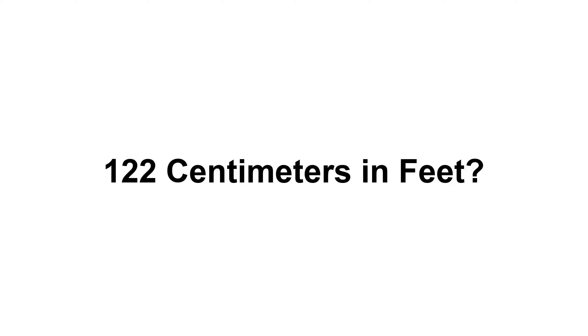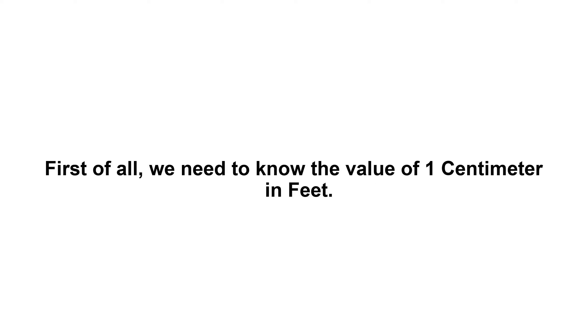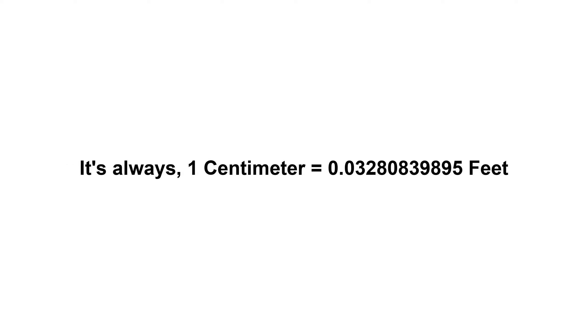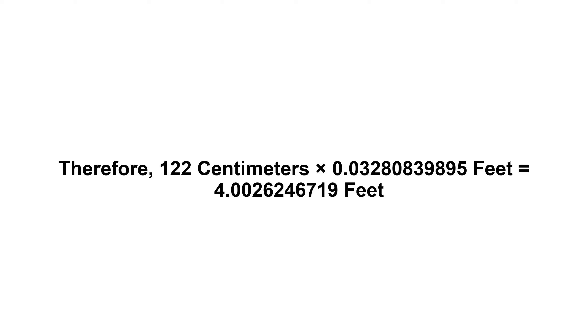122 centimeters in feet. First of all, we need to know the value of one centimeter in feet. One centimeter equals 0.03280839895 feet. Now we have to multiply 0.03280839895 by 122. Therefore, 122 centimeters times 0.03280839895 feet equals...